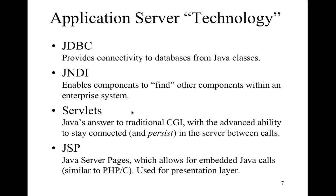The problem with CGI is each thread that came through created its own process on the server, running its own version of the executable and consuming server resources. For a small script, you might not notice it, but for something like a database connection, each client opens its own session. With millions of people on the internet accessing applications, this could easily take the database down. Long story short — very slow, extremely inefficient — but CGI is still around today because it allows you to run non-internet applications like regular C++ or C code.